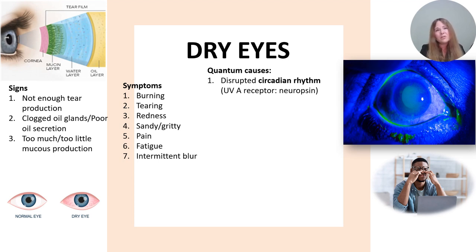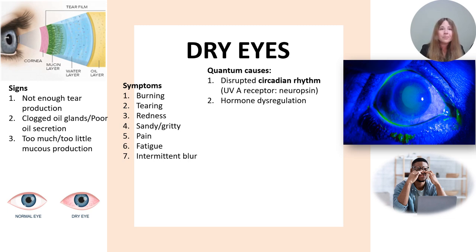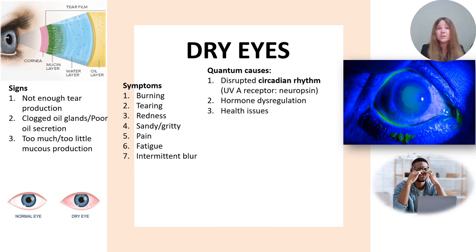Without that UVA and full-spectrum sunlight, this can lead to different health issues like hormonal dysfunction. Hormonal dysfunctions play a really large role in how our glands function, including the oil glands in our lids, the glands that make water, and those goblet cells that secrete mucus. All those cells have clock genes, and they require proper timing and proper hormonal signals to work well. Poor circadian rhythm can also contribute to a long list of health issues like diabetes, cardiovascular disease, and autoimmune issues.